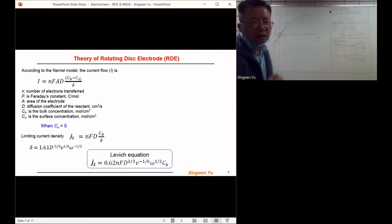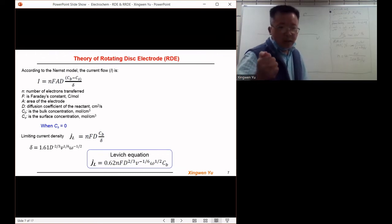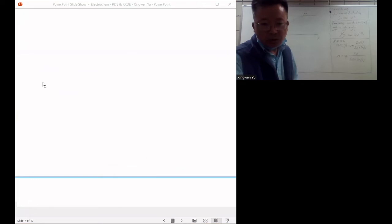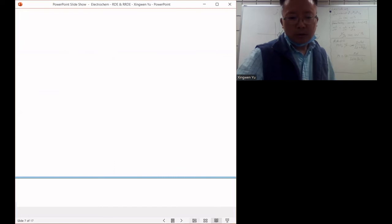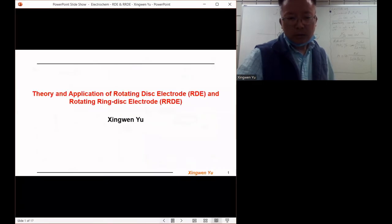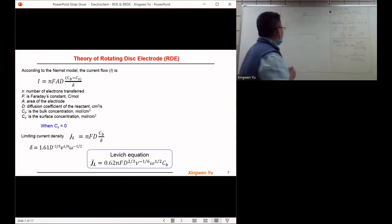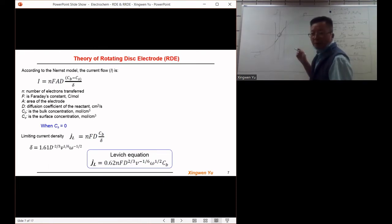In case the charge transfer of the reactant is super fast, and once the reactant species come to the surface of the electrode, it will be quickly reduced or oxidized. For example, under high polarization conditions, because the electron transfer is super fast, once the reactant species come to the surface of the electrode, it will be either oxidized or reduced quickly. In that case, the surface concentration C_S will be zero, because once the reactant species come to the surface, it will react immediately.